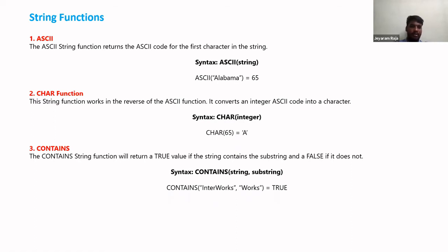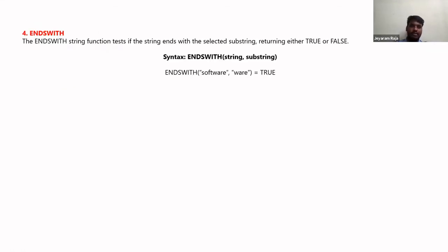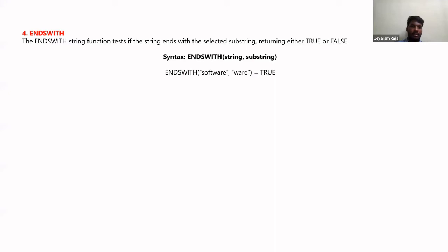The CONTAINS function is case-sensitive. The ENDSWITH function is similar to CONTAINS but only checks whether the substring appears at the end of the string. For example, ENDSWITH('software', 'ware') returns true. The difference is that CONTAINS checks any position — start, middle, or end — while ENDSWITH is specifically concerned with whether the substring is at the end of the string.